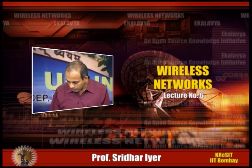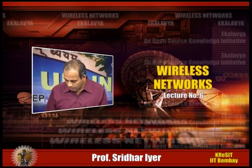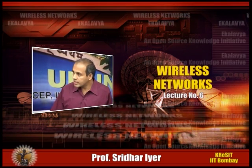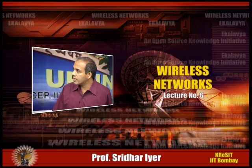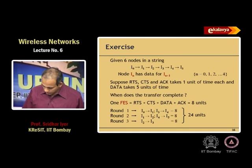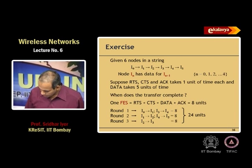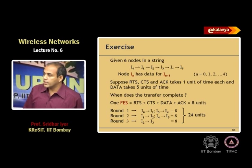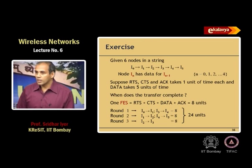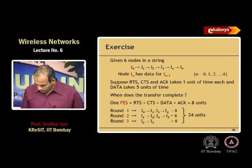Given 6 nodes in a string, I0 to I5, each node has data to send to its next neighbor. RTS, CTS, and ACK each take 1 unit of time, and data takes 5 units of time. We need to figure out when all the nodes finish communicating with each other. One transmission is one frame exchange sequence in 802.11.